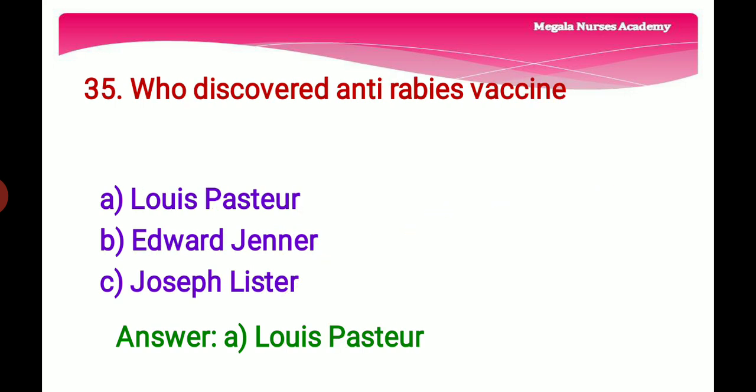Thirty-fifth question: Who discovered the anti-rabies vaccine? Option A: Louis Pasteur, the inventor of the rabies vaccine in 1885. Option C: Joseph Lister, the father of modern surgery. The right answer is Option A, Louis Pasteur.